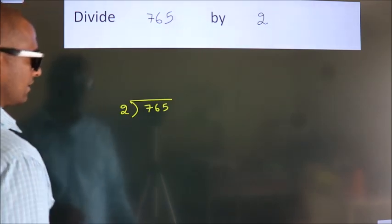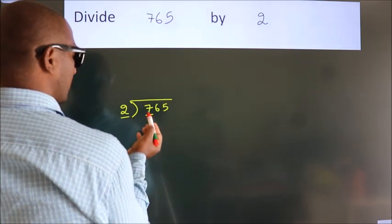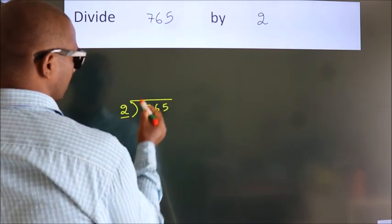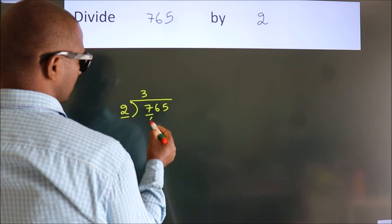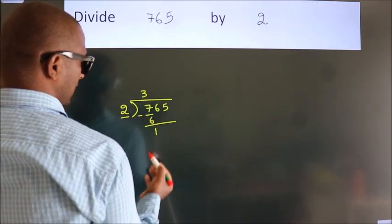Next, here we have 7, here 2. A number close to 7 in the 2 table is 2 times 3, which is 6. Now we subtract and get 1.